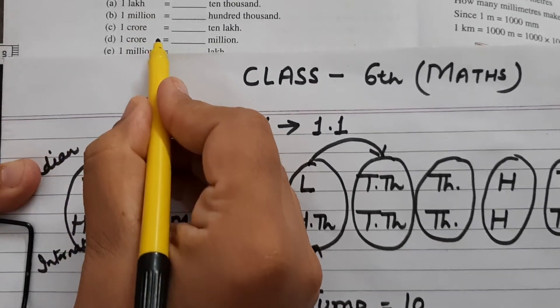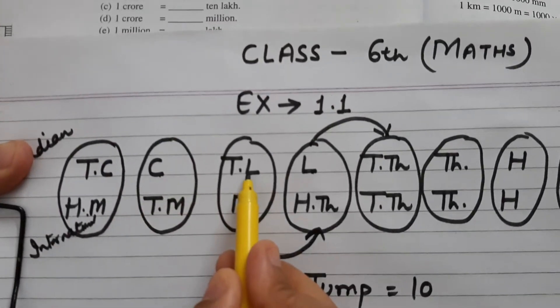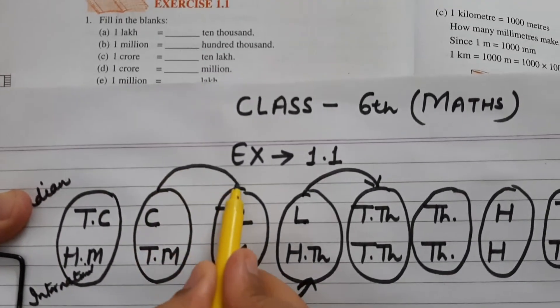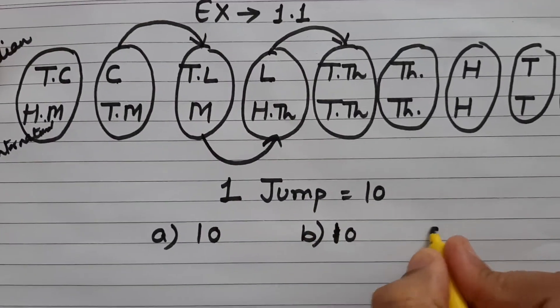Third है, one crore equals to dash ten lakhs. ये crore, ये ten lakhs. आप देख रहे हैं, crore से ten lakhs में भी कितनी jump है? One. One jump equals to ten.